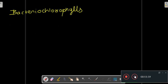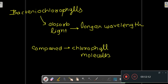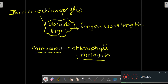Is there any difference between bacteriochlorophylls and normal chlorophyll molecules? Yes — bacteriochlorophylls absorb light at a longer wavelength compared to regular chlorophyll molecules. In comparison, chlorophyll molecules absorb shorter wavelengths of light than those absorbed by bacteriochlorophylls.